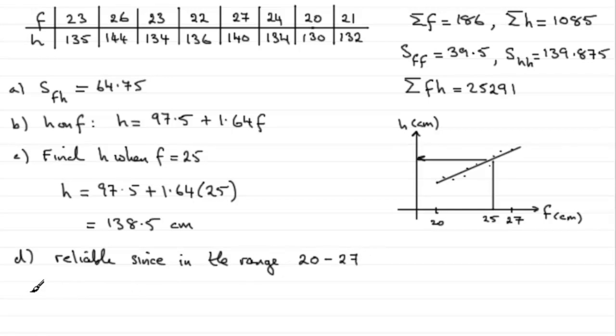And then for part E, we're told that, given reason, we're told that the left foot, if the left foot length of the teacher is 25 centimeters, we've got to give a reason why in part B it should not be used to estimate the teacher's height, this equation.